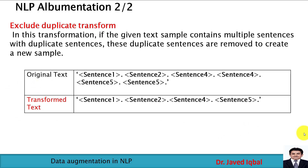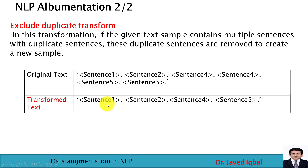Another NLP albumentation method is exclude duplicate transform. In this method, we remove duplicate sentences in the text. For example, the original text comprises sentence 1, sentence 2, sentence 4, sentence 4 again, sentence 5, and sentence 5 again. After applying exclude duplicate transform, the duplicates are removed, and the new transformed text contains sentence 1, sentence 2, sentence 4, and sentence 5. These NLP albumentation techniques can be used to create new text or expand text using shuffle sentence transformation and exclude duplicate transformation.